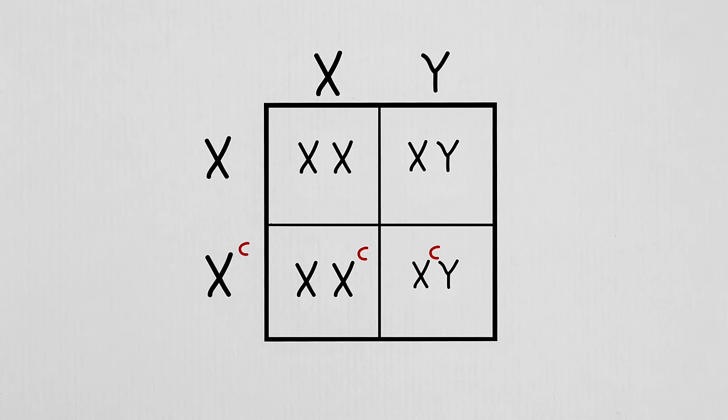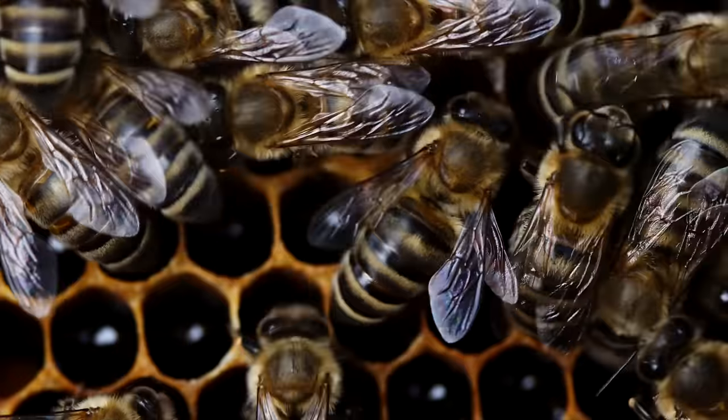In humans, females are genetically XX whereas males are genetically XY. The Y chromosome, although very small, contains the SRY gene, which leads to the development of male characteristics like testes. The overwhelming majority of sex-linked traits are located on the X chromosome and are recessive. Since males only have one X chromosome, they are hemizygous, which means they will always express the trait if inherited. For this reason, sex-linked recessive disorders like red-green colorblindness and hemophilia are more common in men and often pass from unaffected mothers to affected sons in pedigrees.